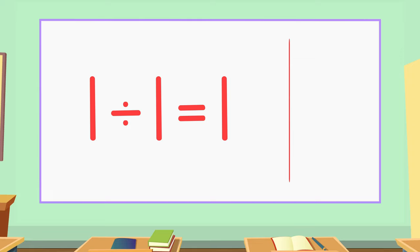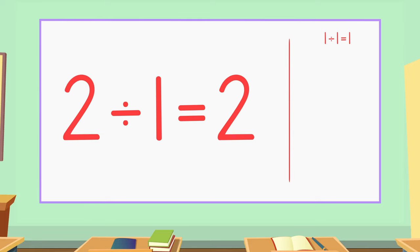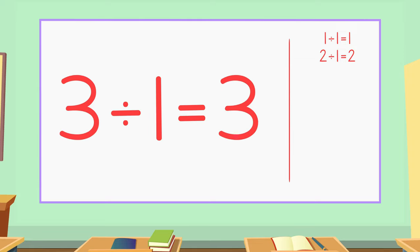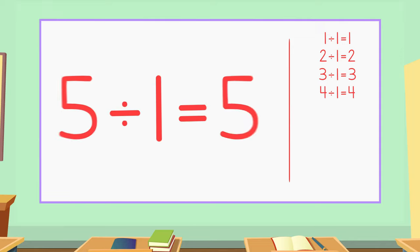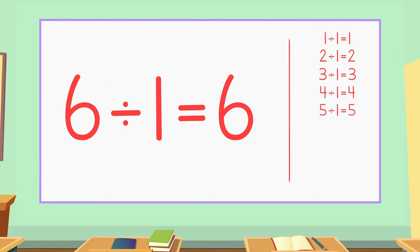1 divided by 1 equals 1. 2 divided by 1 equals 2. 3 divided by 1 equals 3. 4 divided by 1 equals 4. 5 divided by 1 equals 5. 6 divided by 1 equals 6.